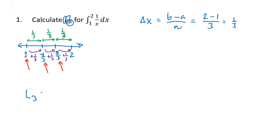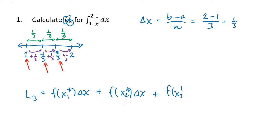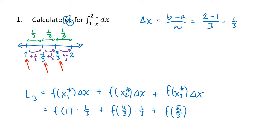So L3 = f(x₁*) · Δx + f(x₂*) · Δx + f(x₃*) · Δx. Those f values are the heights of my rectangles and Δx is the base, so I'm calculating the area of three separate rectangles and adding them together. f(x₁*) = f(1), f(x₂*) = f(4/3), and f(x₃*) = f(5/3), each multiplied by Δx = 1/3. Since f(x) = 1/x, I plug in those values and get approximately 0.783.